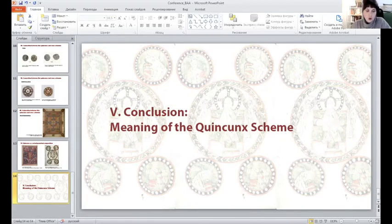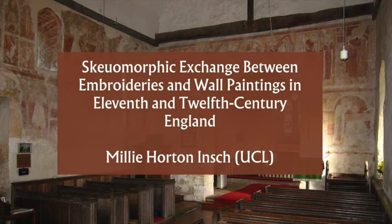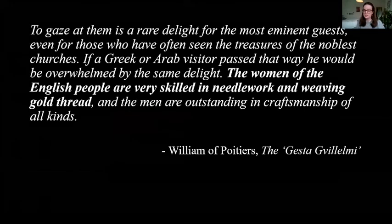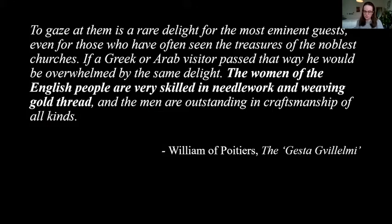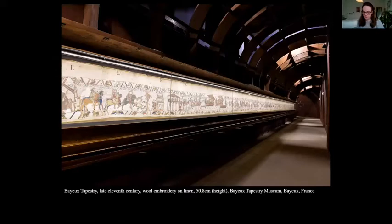In the years following the Norman conquest, the 11th century chronicler William of Poitiers wrote an account of the life of William the Conqueror, in which he included a lengthy description of the treasures William brought back from the newly conquered England to furnish the churches of his homeland, and noted that the women of the English people are very skilled in needlework and weaving gold thread. That William of Poitiers singled out needlework, and in such gendered and racialized terms, is consistent with other contemporary sources that not only praise embroideries but relate their production to the skill of English women.